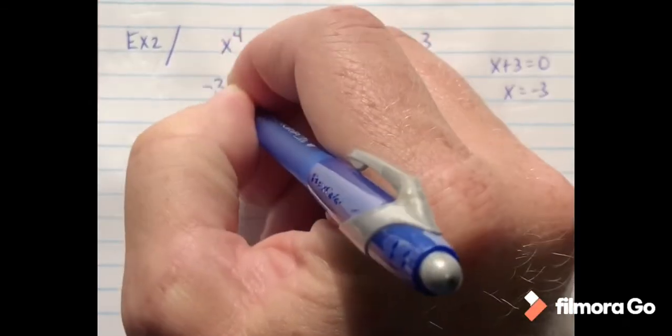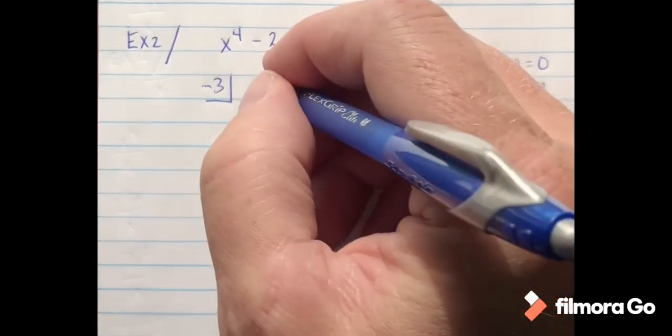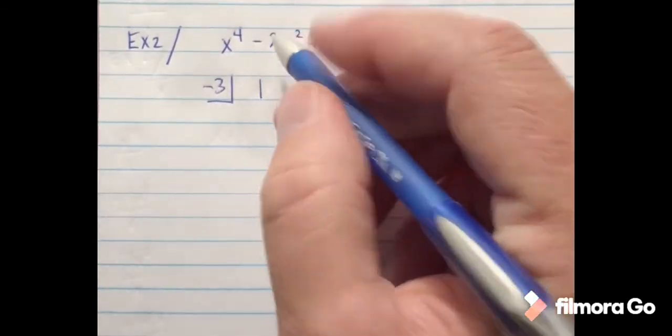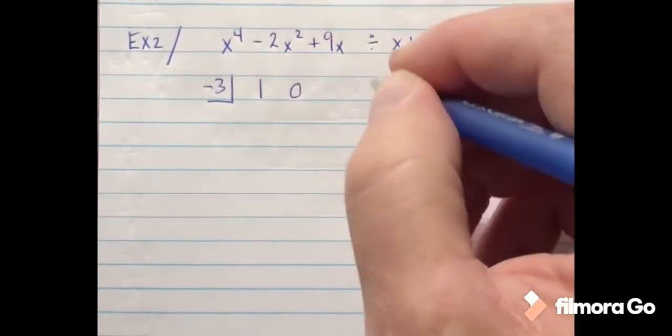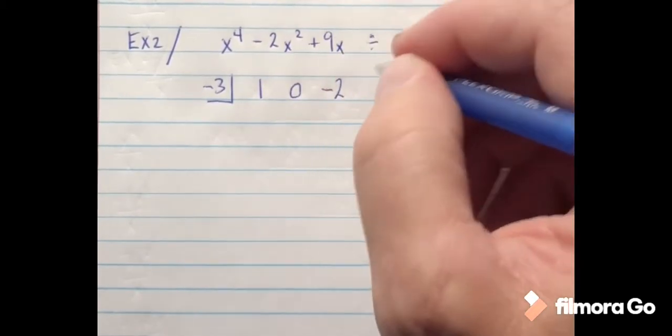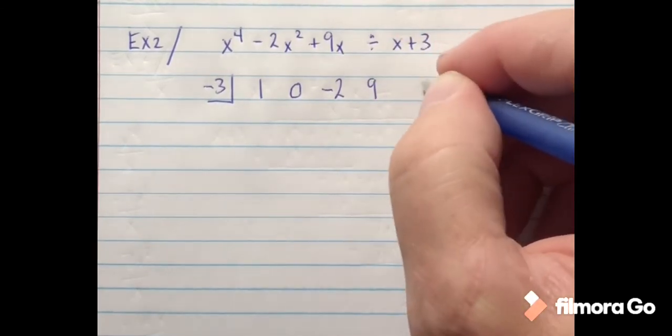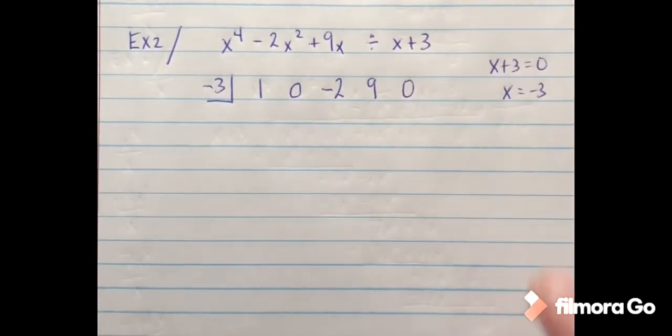So the negative 3 is going to go in the box. I'm going to list my coefficients. So I've got a 1. Notice I don't have an x to the third, so I'm going to put a 0. Then a negative 2 for my x squared, and then a 9 for my x, and then a 0 for the constant.